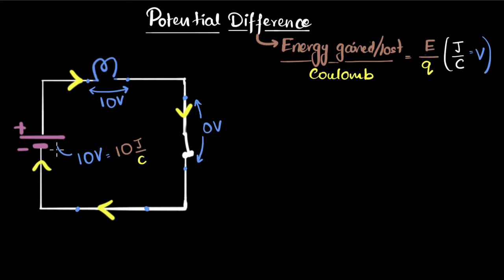Now, can you think about what would it mean if you had a battery which had 100 volt? Well, it just means that that battery transfers 100 joules of energy per coulomb. Makes sense, right? That's all what potential difference is.